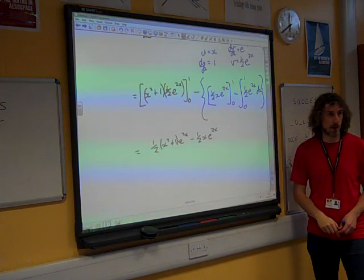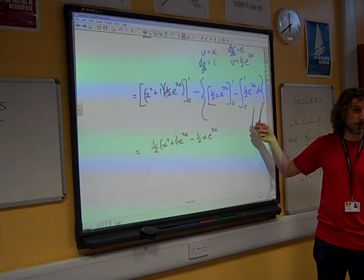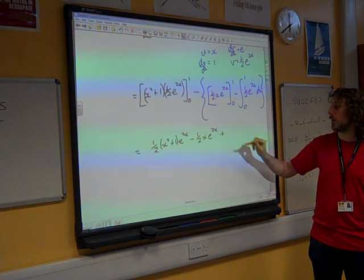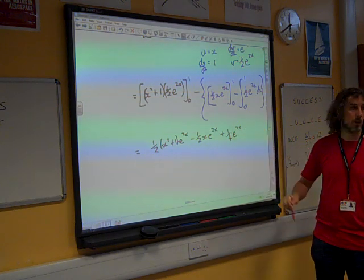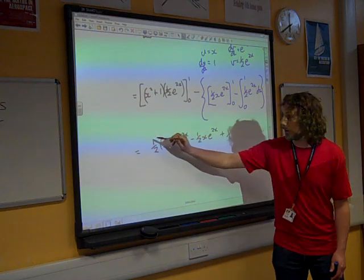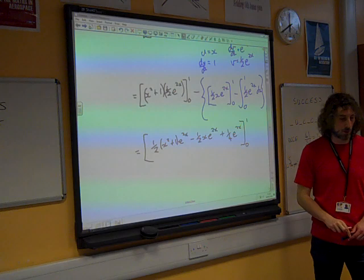And then, I said I was going to be careful with the brackets. We've ended up with a minus minus the integral of this. And I made that plus 1 quarter e to the 2x. And all of that lot is between 0 and 1.